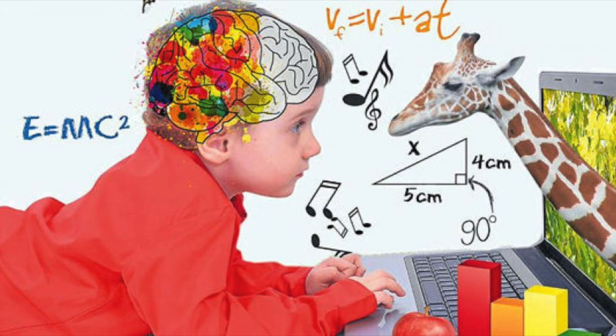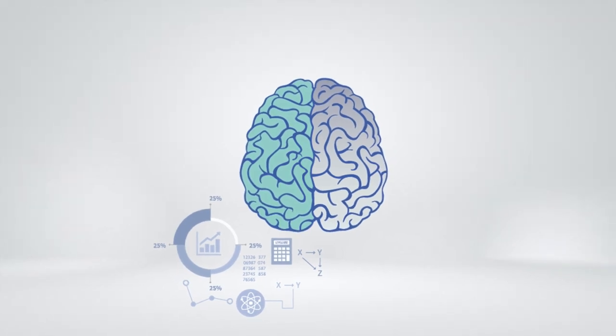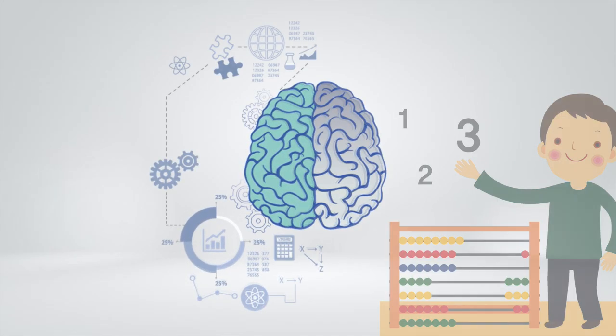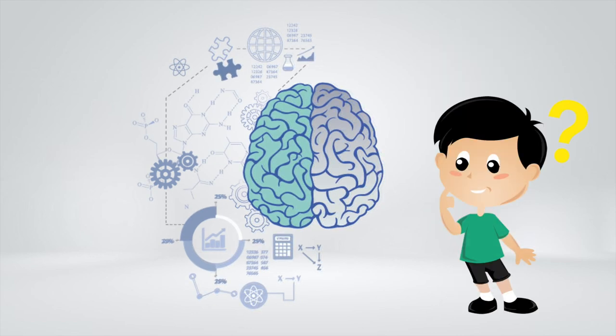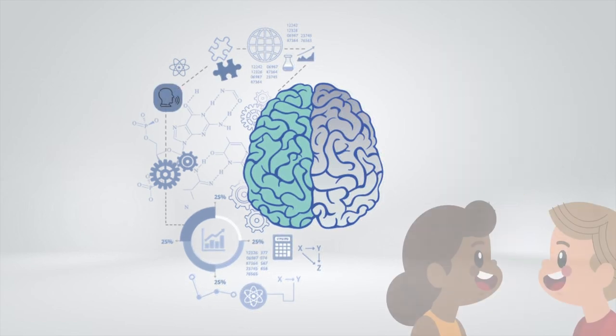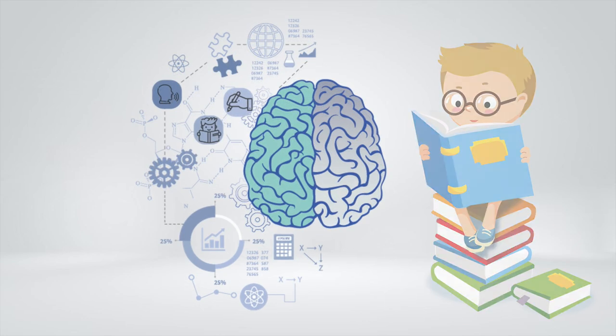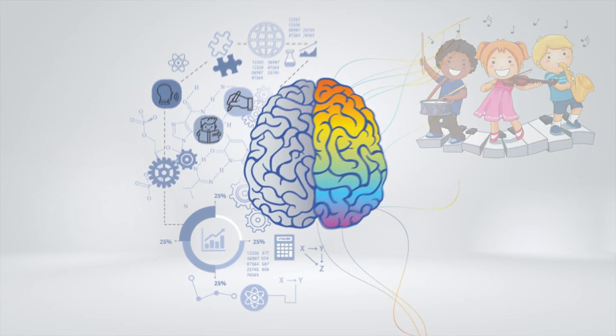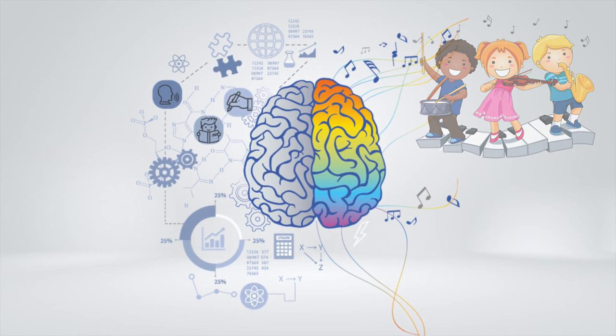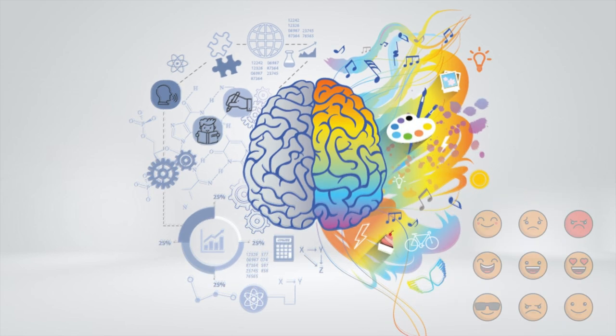For example, the left side is related to very important tasks as math, logical skills, reasoning, speaking, reading, and writing. Instead, the right hemisphere is dominant for creative activities such as music, art, imagination, and emotions.